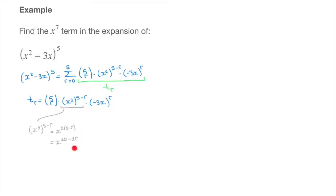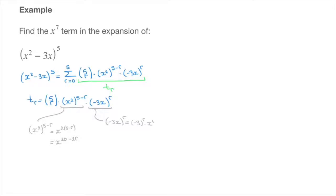We now focus on the last term, negative 3x raised to the power of r. The important thing to remember is that this power of r distributes onto each of the two terms being multiplied inside those parentheses. In other words, this equals negative 3 raised to the power of r times x to the power of r.